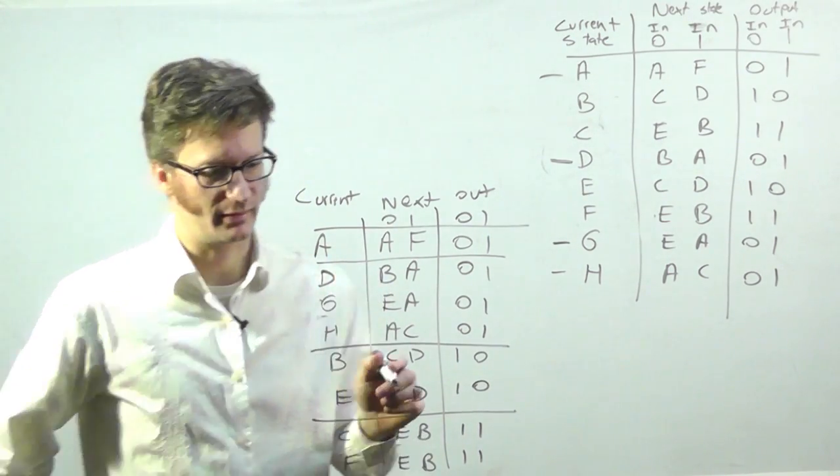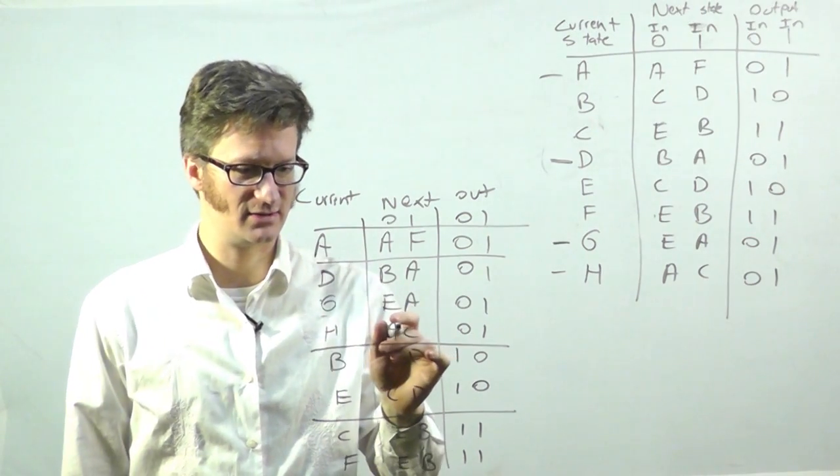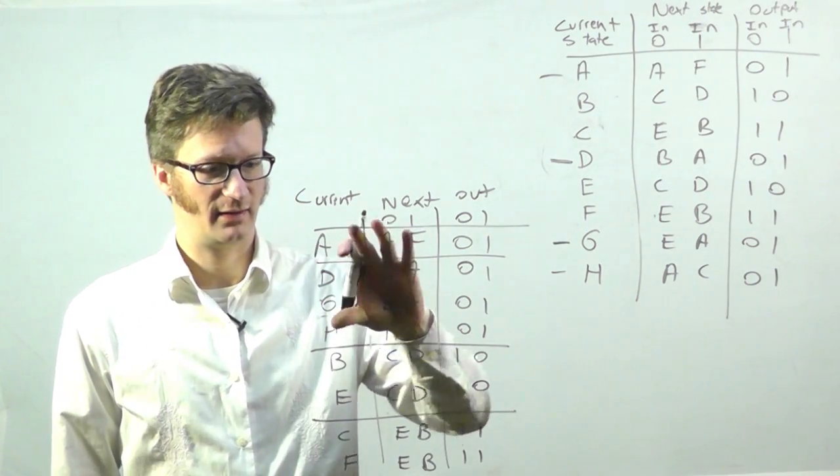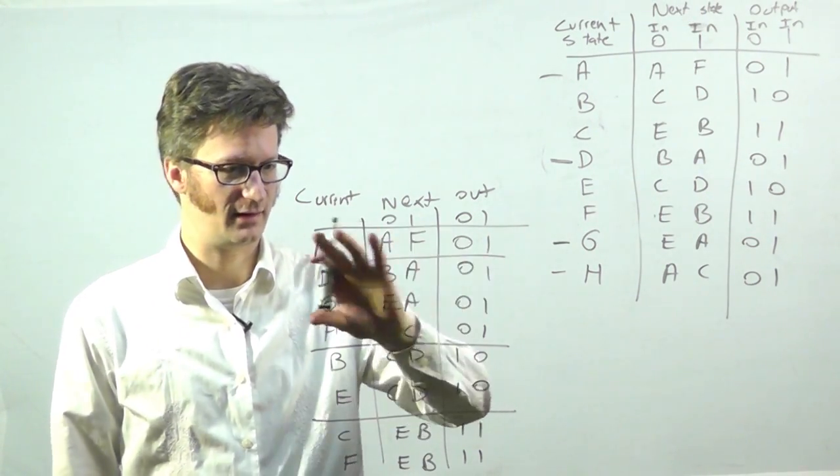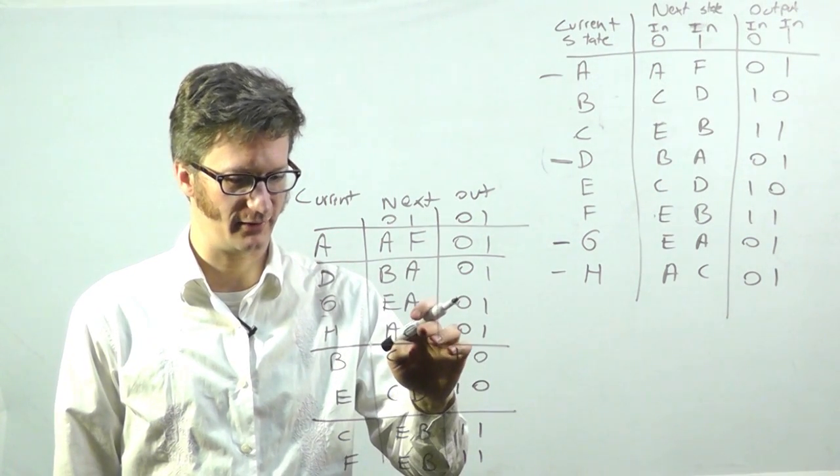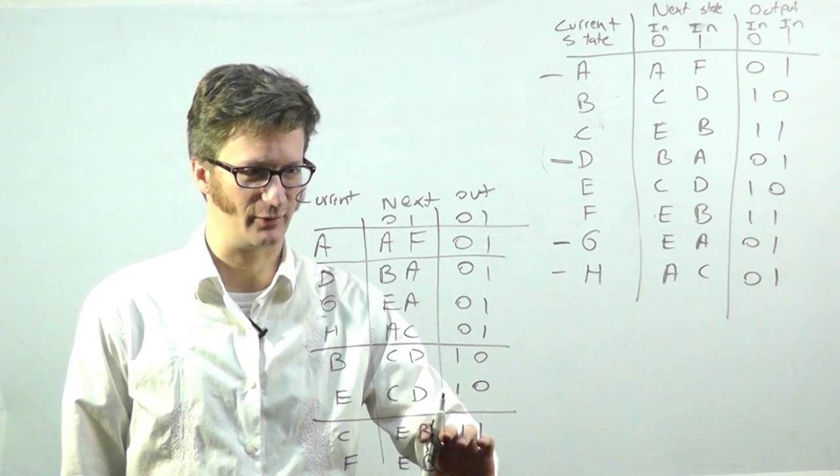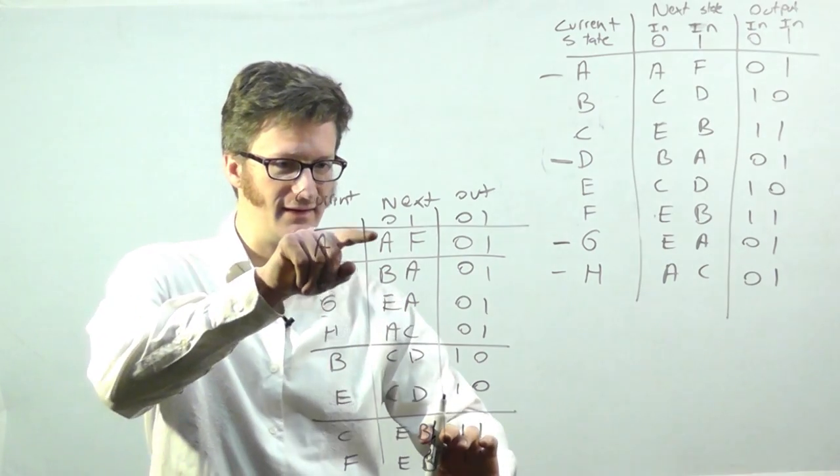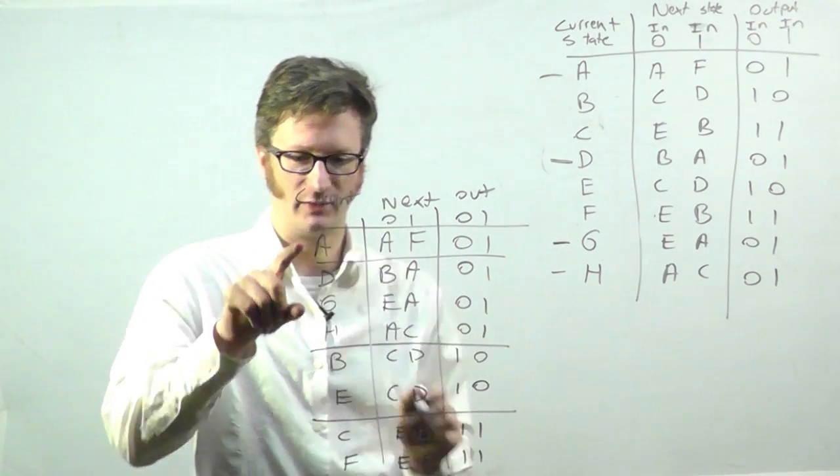So now I'm going to look at H. H jumps to A. And then for the one, it jumps down to this group. And you can see that this is equivalent to A, like that.